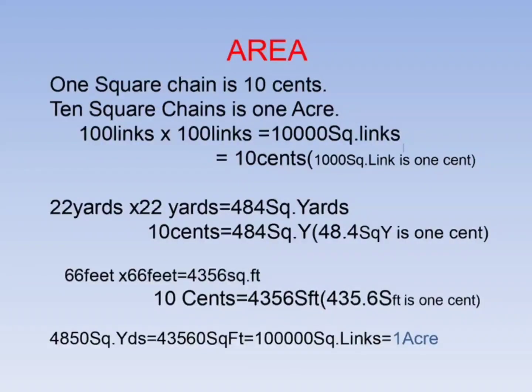Area is measured with chain. One square chain is 10 cents. Ten square chains is 1 acre. 100 links by 100 links is equal to 10,000 square links, that is 10 cents. One cent is 1,000 square links. 22 yards by 22 yards is equal to 484 square yards. 66 feet by 66 feet is equal to 4,356 square feet.